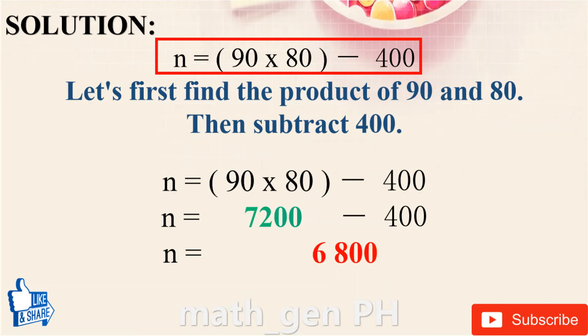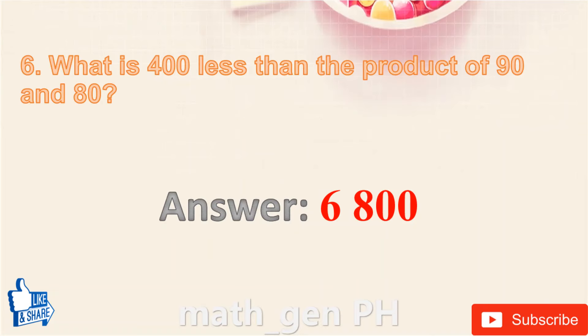Solution: N = (90 × 80) − 400. First, find the product of 90 and 80: 90 × 80 = 7,200. Next, subtract 400 from 7,200: 7,200 − 400 = 6,800. N = 6,800. Answer: 6,800.